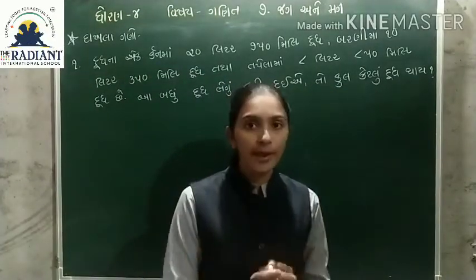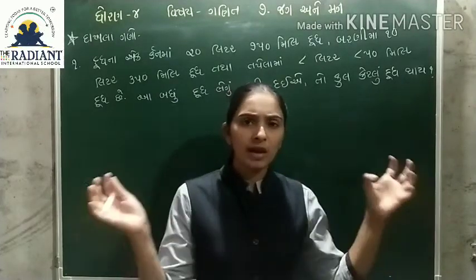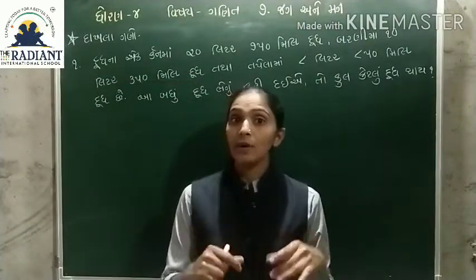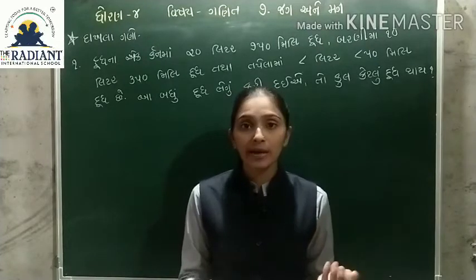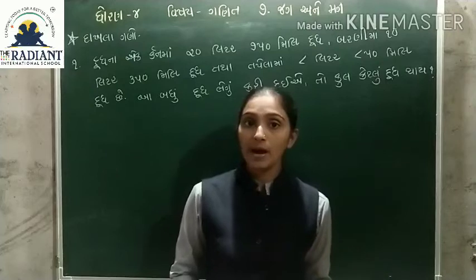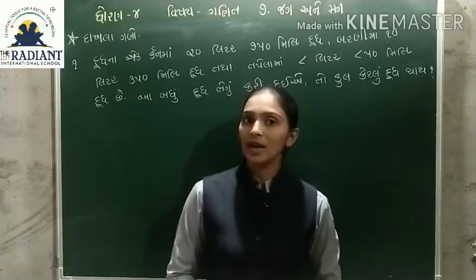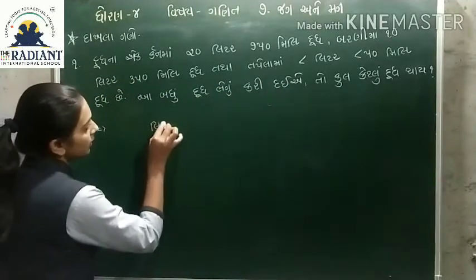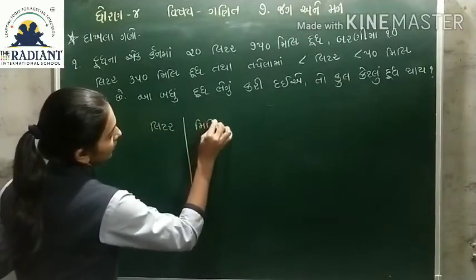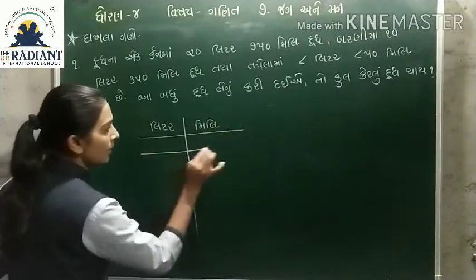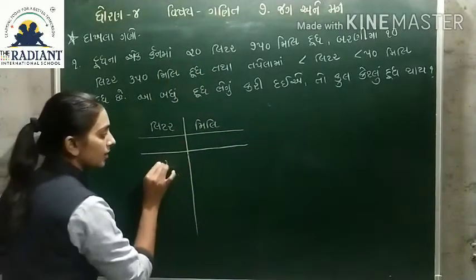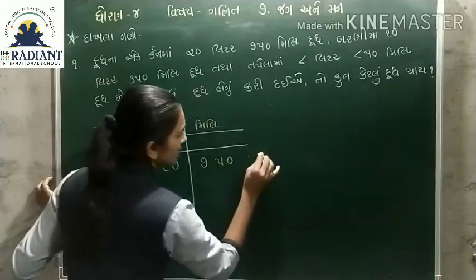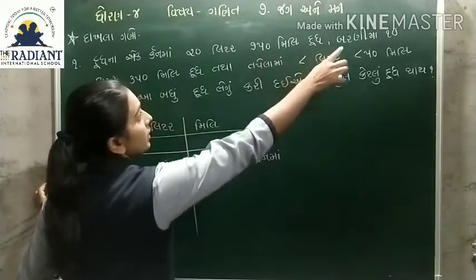હવે આ બધું દૂધ ભેગું કરી દઈએ - ભેગું કરવું એટલે સૂ કરવું, બધાને એક સાથે કરી દેવું. તો કૂલ કેટલું દૂડ થાય, આ સોટવા ના છે. અને કૂલ દૂડ સોટવા માટે આપણે સૂ કળીસૂ - સરવારો, બાડ બાકી, ગુણાકાર, કે ભગાકાર? - તો સરવારો કળીશૂ.